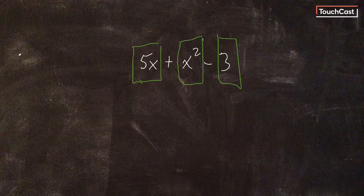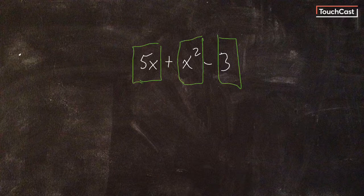So 5x is its own term, x squared is a term, and 3 is a term. And that's how we talk about it.